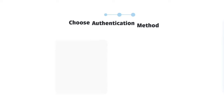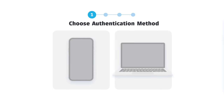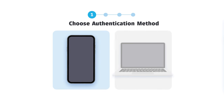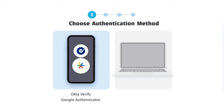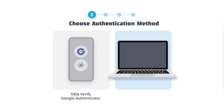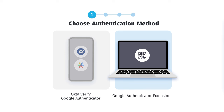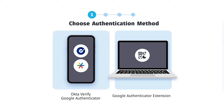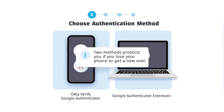To set up MFA, you begin by choosing your authentication method. On your mobile, you can use OctoVerify or Google Authenticator. On your laptop or desktop, you can activate a Google Authenticator extension in either your Edge or Chrome web browser. We strongly recommend using multiple methods for convenience and security.